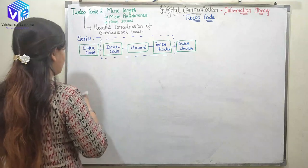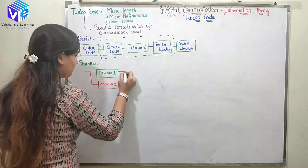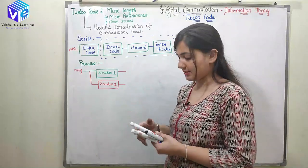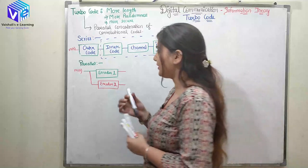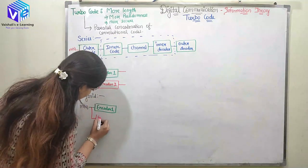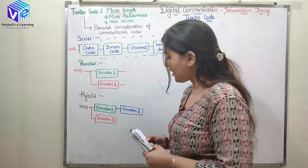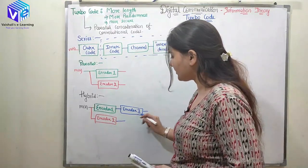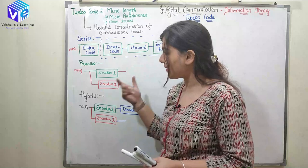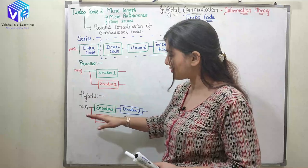After that I have parallel connection, where two encoders are connected parallely. And I can have hybrid connection as well. In hybrid connection, encoder 1 is connected to encoder 3 serially, but encoder 1 is connected to encoder 2 parallely. So this is my series connection, this is my parallel connection, and this is my hybrid connection.